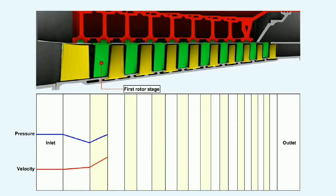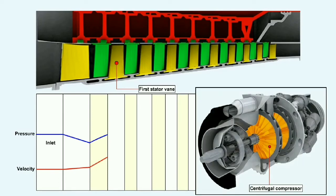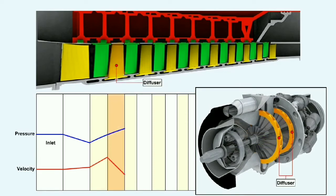In the rotor blades, which are turned continuously at high speed by the turbine, mechanical energy is added and converted into both kinetic (velocity) energy and potential (pressure) energy. Within the stator vanes, air pressure is increased by the conversion of kinetic energy into pressure energy. Essentially, the rotor stages of an axial flow compressor do the same job as the impeller in a centrifugal compressor, while the stator stages can be compared to the diffuser in a centrifugal compressor.